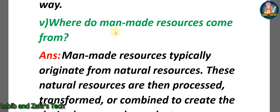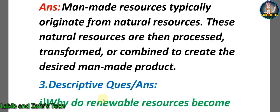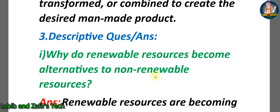Fifth short question: Where do man-made resources come from? Answer: Man-made resources typically originate from natural resources. These natural resources are then processed, transformed, or combined to create the desired man-made product. Now let's go through some descriptive question answers.